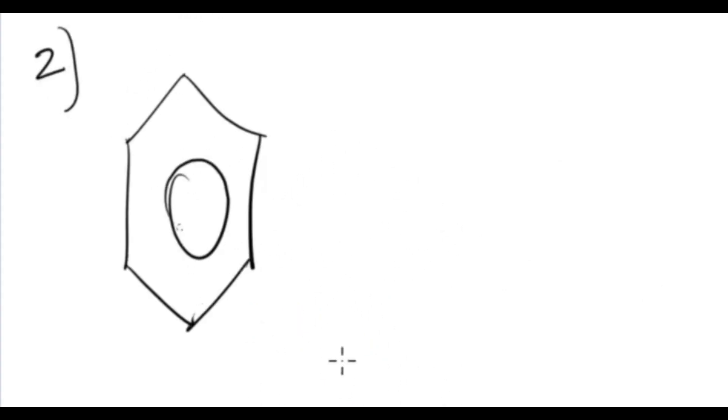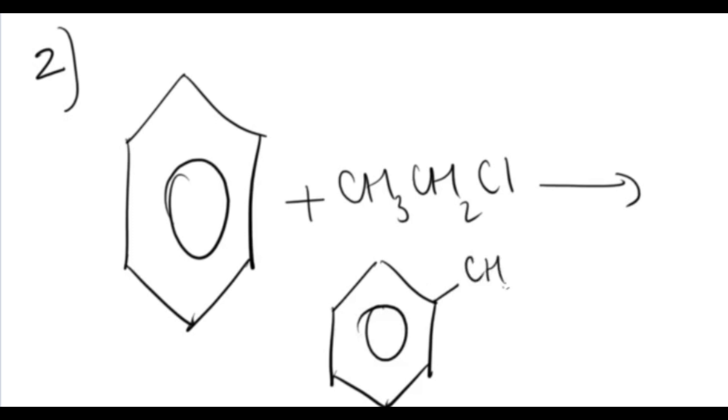And then we have the second question: you had to react ethyl chloroethane with benzene. So what do you get and you had to name the product? When you react this, it is alkylation of benzene and then you end up with ethyl benzene and then hydrogen chloride.